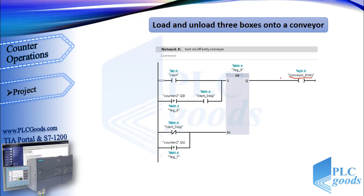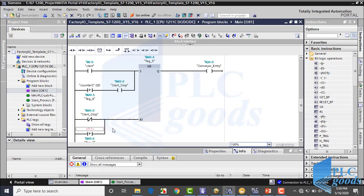In the next network, I've used an SR flip flop to turn the first conveyor on and off. It will be on if the start push button is pressed or there are no boxes on the buffer conveyor — but I don't want to turn this conveyor on when the start-stop memory is off. It will be off if the stop push button is pressed or there are three boxes on the buffer conveyor. Pay attention to how we refer to output QU of the counter — when this output is on, it means the current value is equal to or greater than the preset value, meaning there are three boxes on the buffer conveyor.